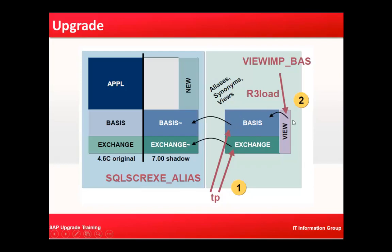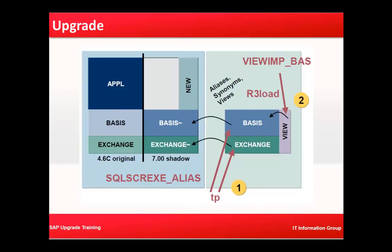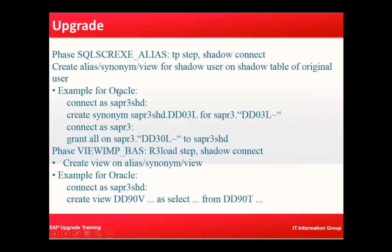In the actual upgrade, you are populating exchange tables, basis tables, views, etc. In the phase SQL_SCR_EXE_ALIAS, a TP step shadow connect process creates the alias, synonym, and views for the shadow user on the shadow table of the original user. For example, you connect as the shadow schema user SAP R3 SHD and create a synonym — connecting as SAP R3, granting all on the tilde-named table to SAPR3SHD.